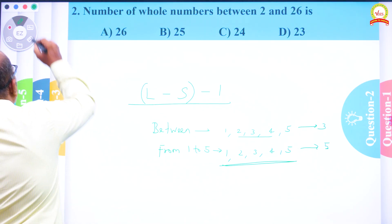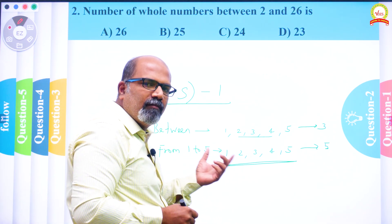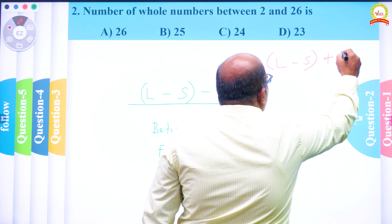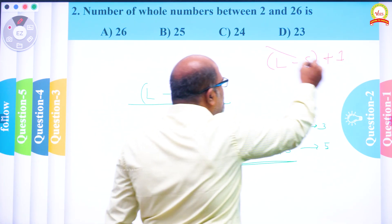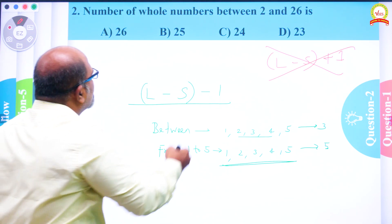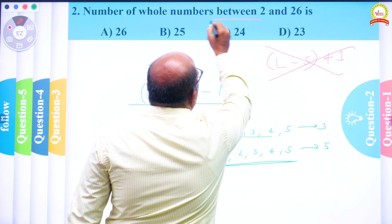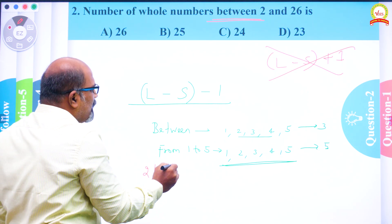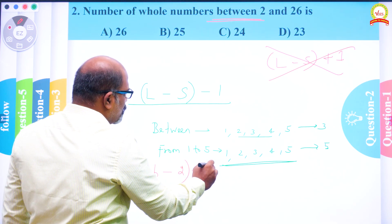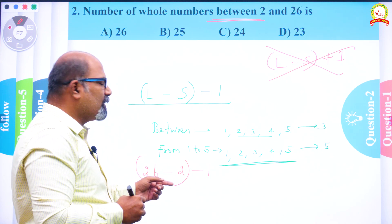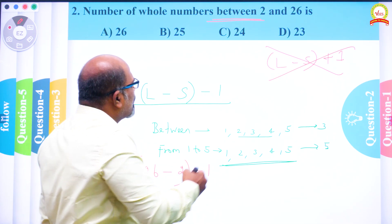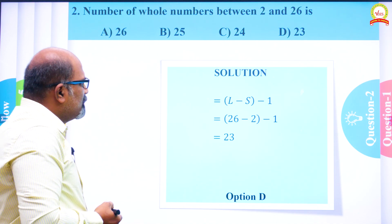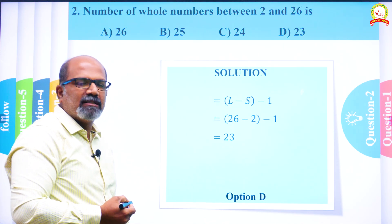Since the question asks for whole numbers between 2 and 26, we use the 'between' formula. The largest number is 26 and the smallest is 2. So the answer is 26 minus 2 minus 1, which equals 24 minus 1, which is 23. The correct option is option D, which is 23. The printed solution confirms the same answer.